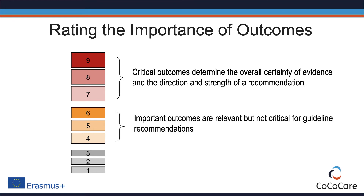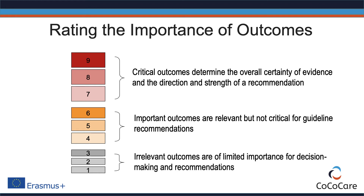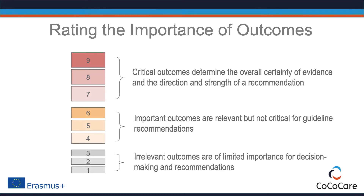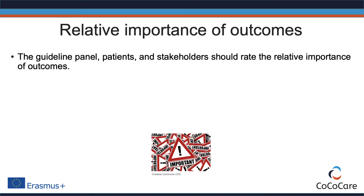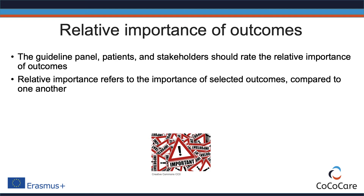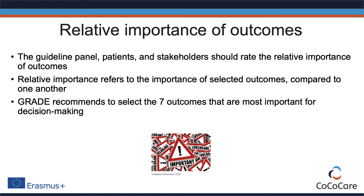Outcomes rated between 4 and 6 are considered important, but not critical to the decision regarding an intervention. Outcomes rated 1 to 3 are considered irrelevant or of limited importance for guideline development. Not only the guideline panel, but ideally also patients and other stakeholders should be involved in rating the relative importance of the selected outcomes. Relative importance refers to the importance of selected outcomes compared with one another — not an absolute importance where mortality might always be on top.